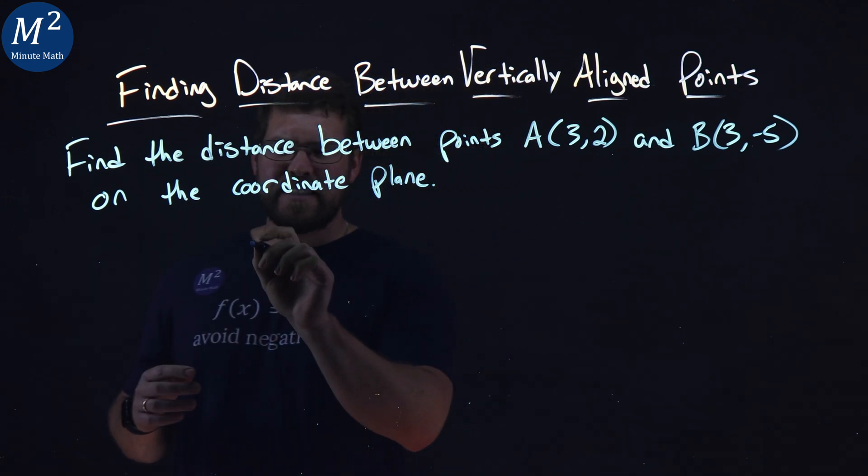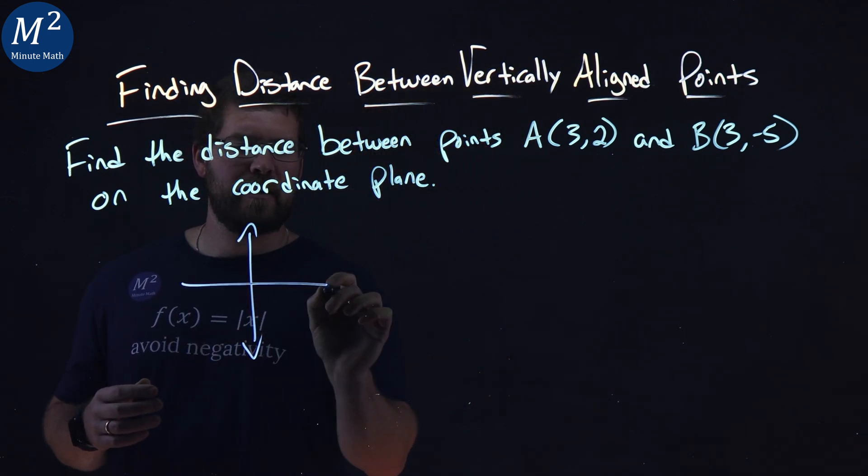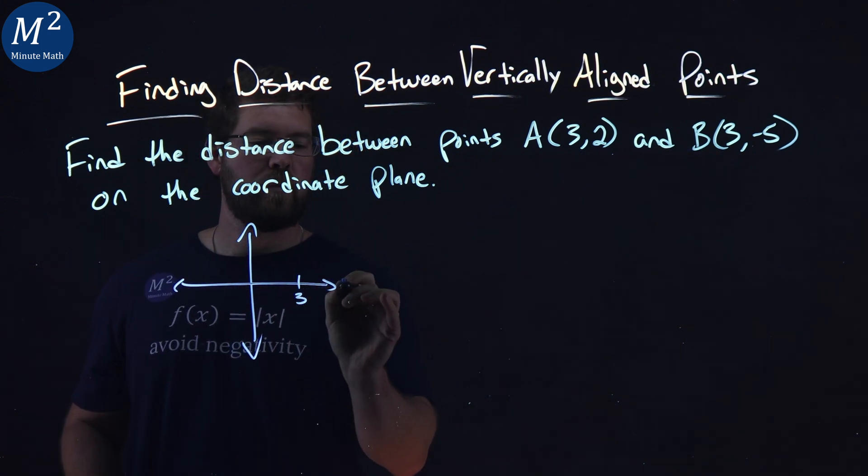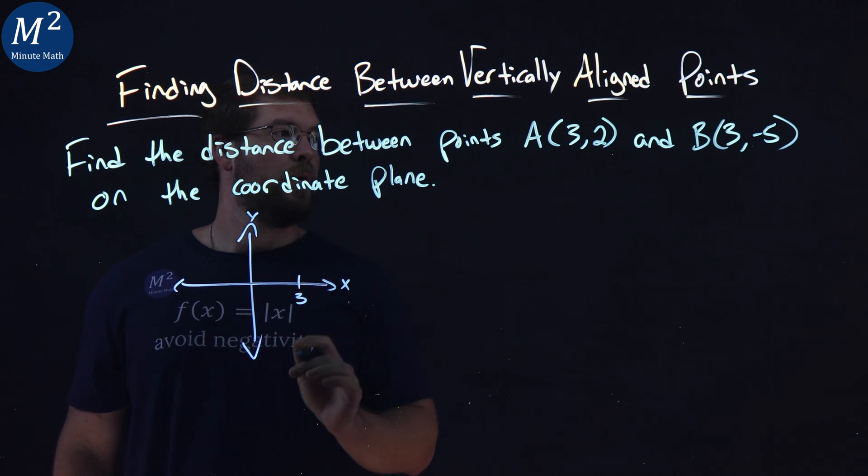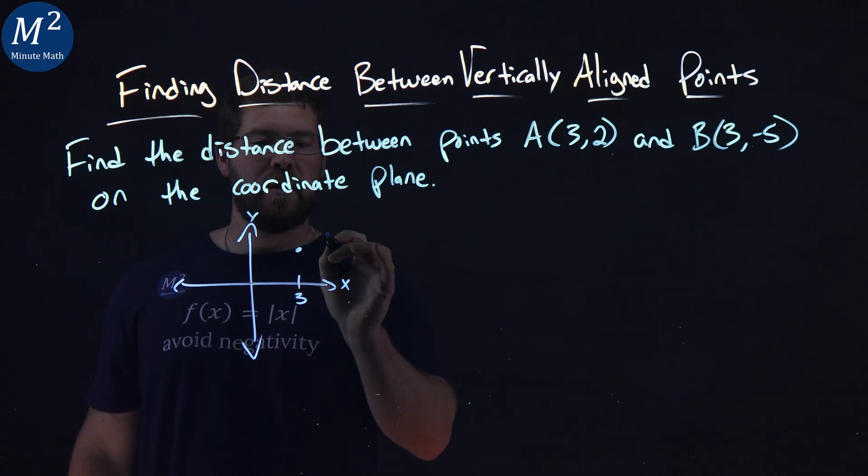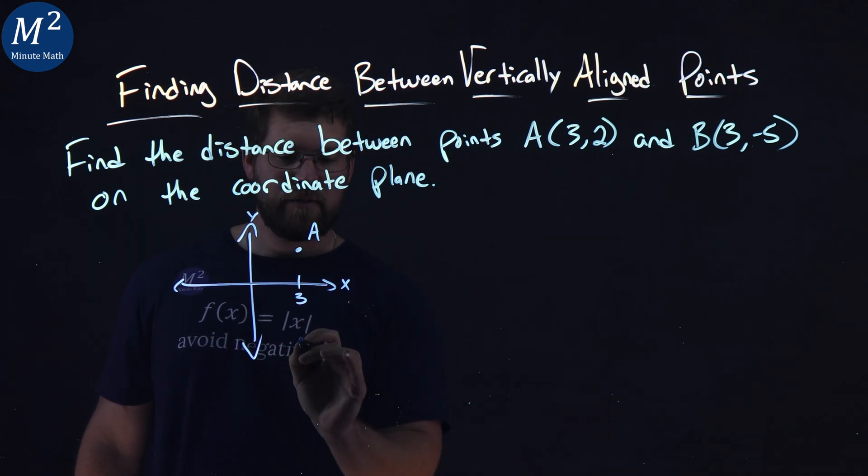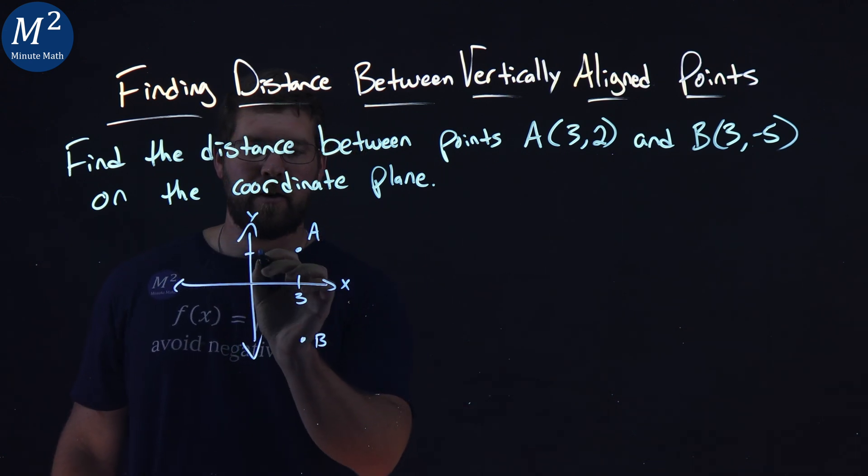If we see this quick sketch of these points, they both have an x value of 3. We have 3, 2, so somewhere up here is point A, and B is 3, comma negative 5. Somewhere down here is our B.